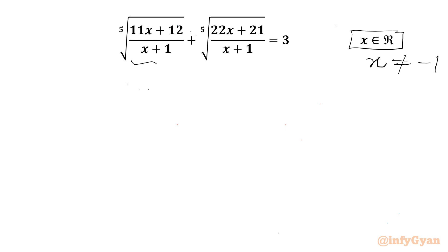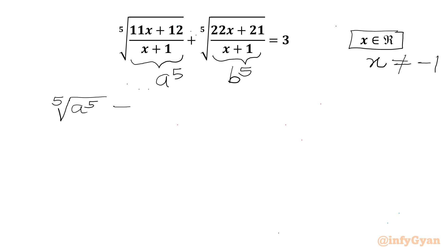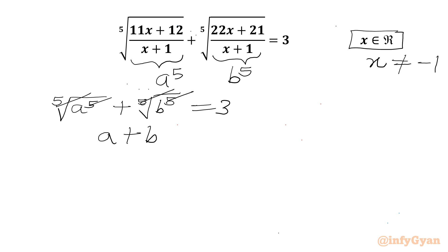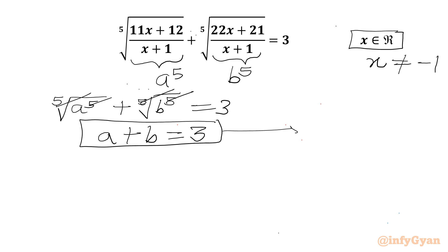Now I will use substitutions. Let us say this radicand equal to a power 5, and this radicand we can consider b power 5. So I will be writing our equation as the 5th root of a⁵ plus the 5th root of b⁵ equal to 3. Since the 5th root of a⁵ is just a, we get our first equation: a plus b equals 3. This is equation number 1.